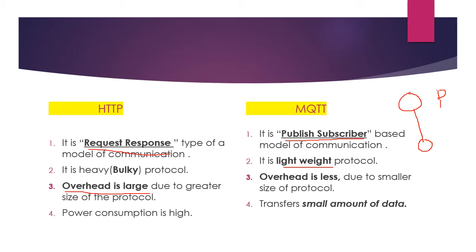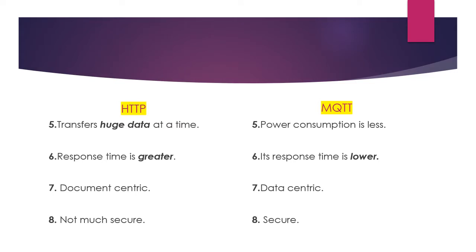The fourth difference is power consumption. Power consumption is high for HTTP because it is a bulk protocol and transfers large amounts of data. For MQTT the power consumption is low, as it transfers only small amounts of data. MQTT is used in IoT devices because there we need to transfer only small amounts of data, so overhead is less as well.